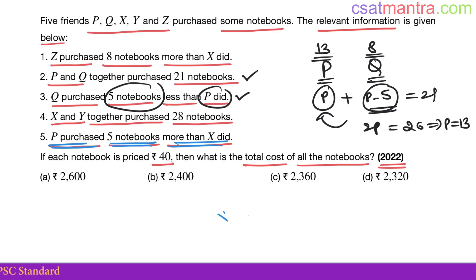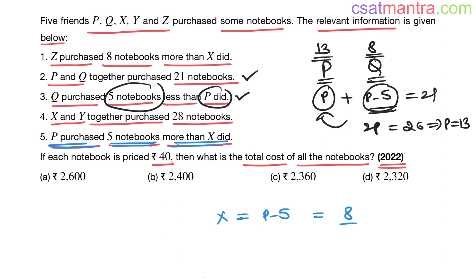Now P purchased 5 notebooks more than X did. X would be p minus 5, that is 13 minus 5, again 8. See this, X and Y together purchase 28 books. X already purchased 8, Y would be 28 minus 8, that would be 20.